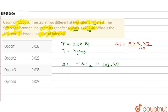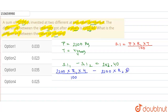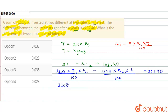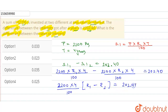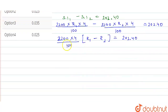Substituting the values: 2200 into R1 into 4 divided by 100, minus 2200 into R2 into 4 divided by 100, equals 202.40. From both terms, the common factor 2200 into 4 divided by 100 can be taken out, giving us R1 minus R2.